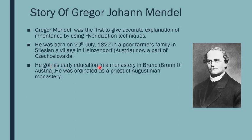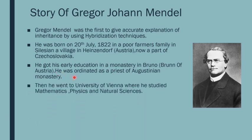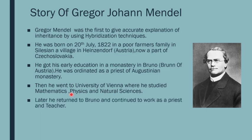He got his early education in a monastery in Brno, which is now part of Austria. He was ordained as a priest of the Augustinian monastery. He was an intelligent child and was sent to the University of Vienna, where he studied mathematics, physics, and natural sciences. Later he returned to Brno, continued to work as a priest and teacher, and started his experiments on the pea plant.